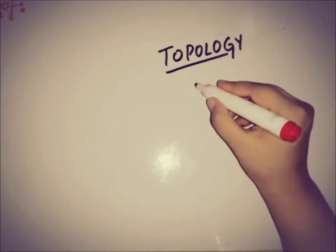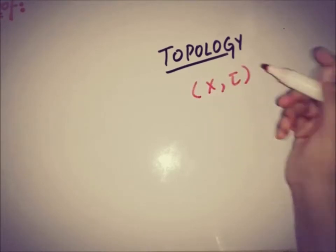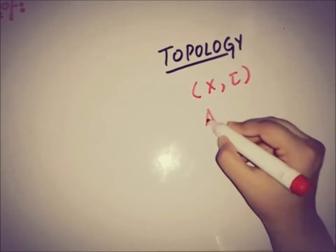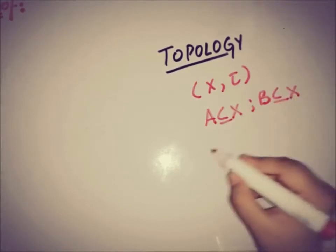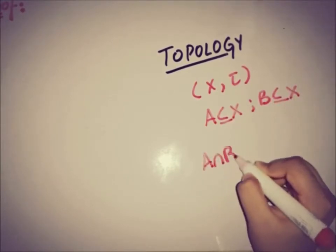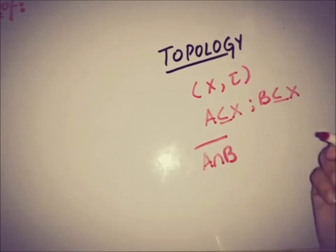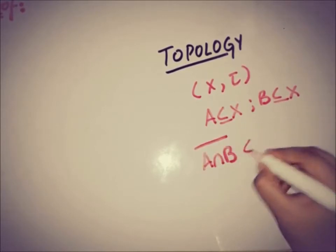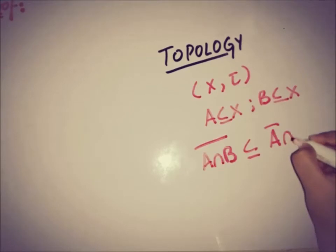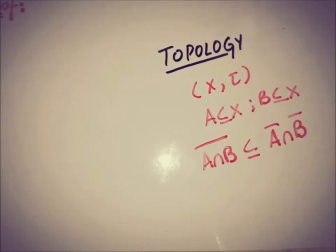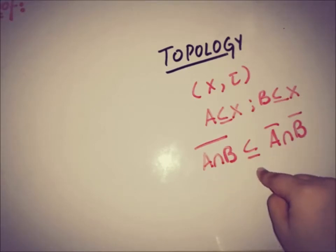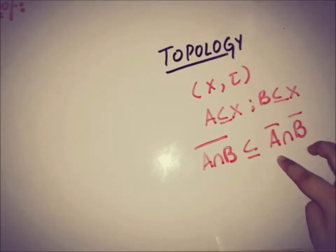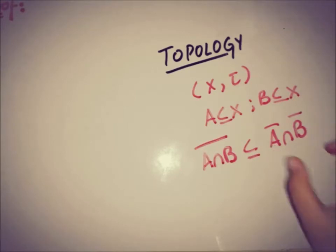If X and tau is a topological space and there are two random subsets of X, A and B, then the theorem states that if we take the intersection of two sets and then the closure of the intersection, it is a subset of A-closure intersection B-closure. That is, the closure of A∩B is a subset of the intersection of the closures of the two sets.